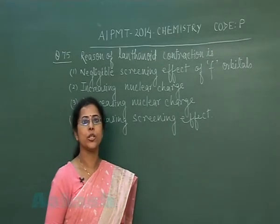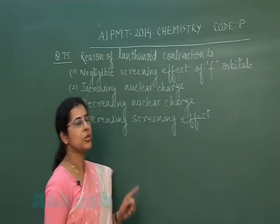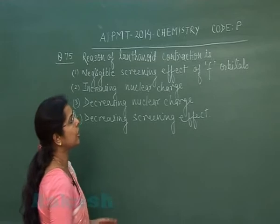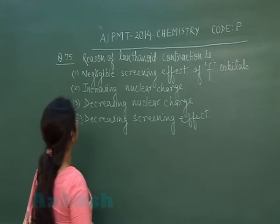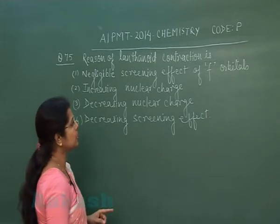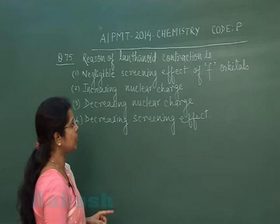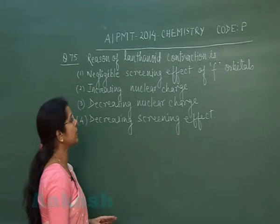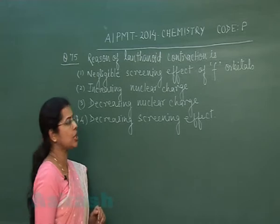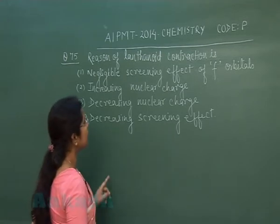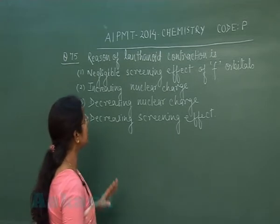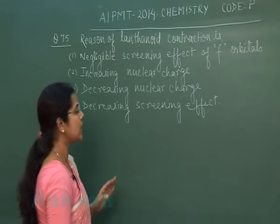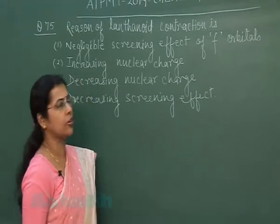Question number 75: The reason for lanthanide contraction is — first option: negligible screening effect of F orbitals; second option: increasing nuclear charge; third option: decreasing nuclear charge; fourth option: decreasing screening effect.